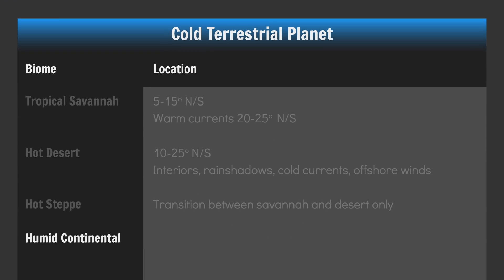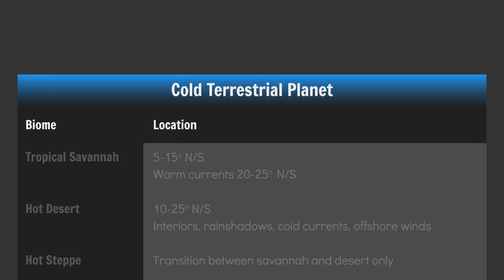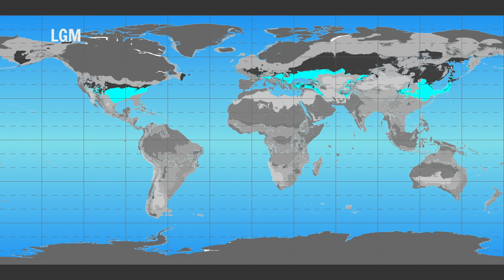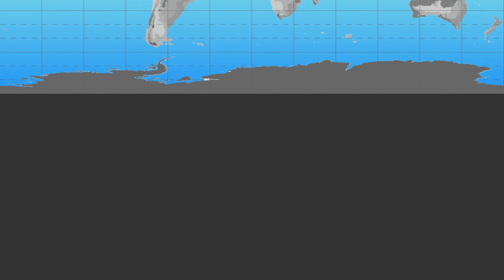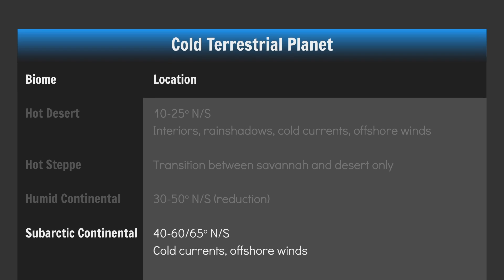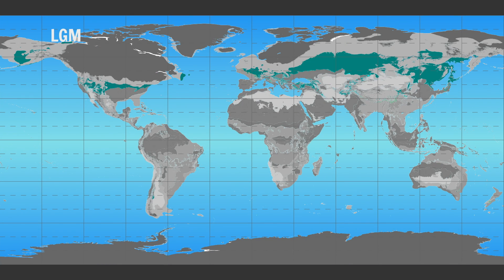In the Ferrel cell, place your humid continental climates between about 30 and 50 degrees north and south. Modern Earth, Cold Earth — check out that reduction. Place your sub-arctic continental climates between 40 to 60 to 65 degrees north and south, skewing the zone towards areas affected by cold currents and offshore winds.